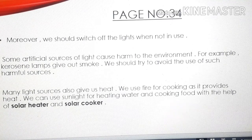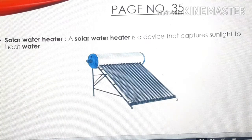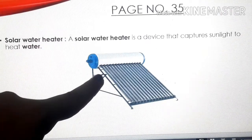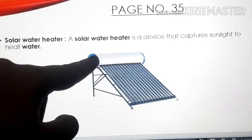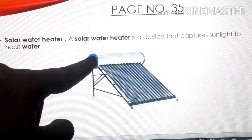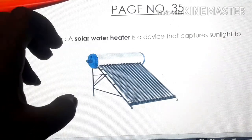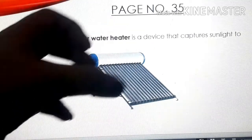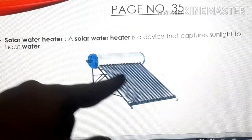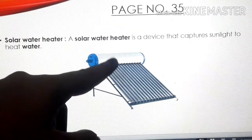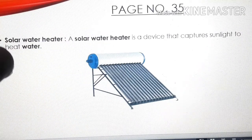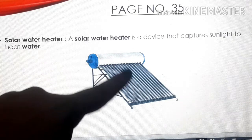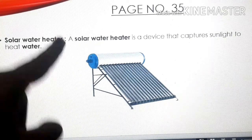This is a solar water heater — a device that captures sunlight to heat water. It has a tank, shown here in white and blue, which contains water. These are the tubes which capture sunlight, and this is how the water in the tank gets heated up. The name of this device is the solar water heater.